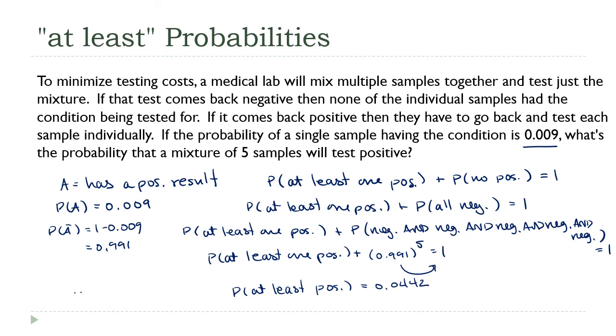Four and a half percent, give or take. That's a pretty decent outcome. Four and a half percent of the time, you're going to get a positive result. You're going to have to go back and split them up and do them all separately, take the hit to the cost. The remaining 95.5% of the time, you're going to save the cost of doing those four other tests because you're going to get a negative result.